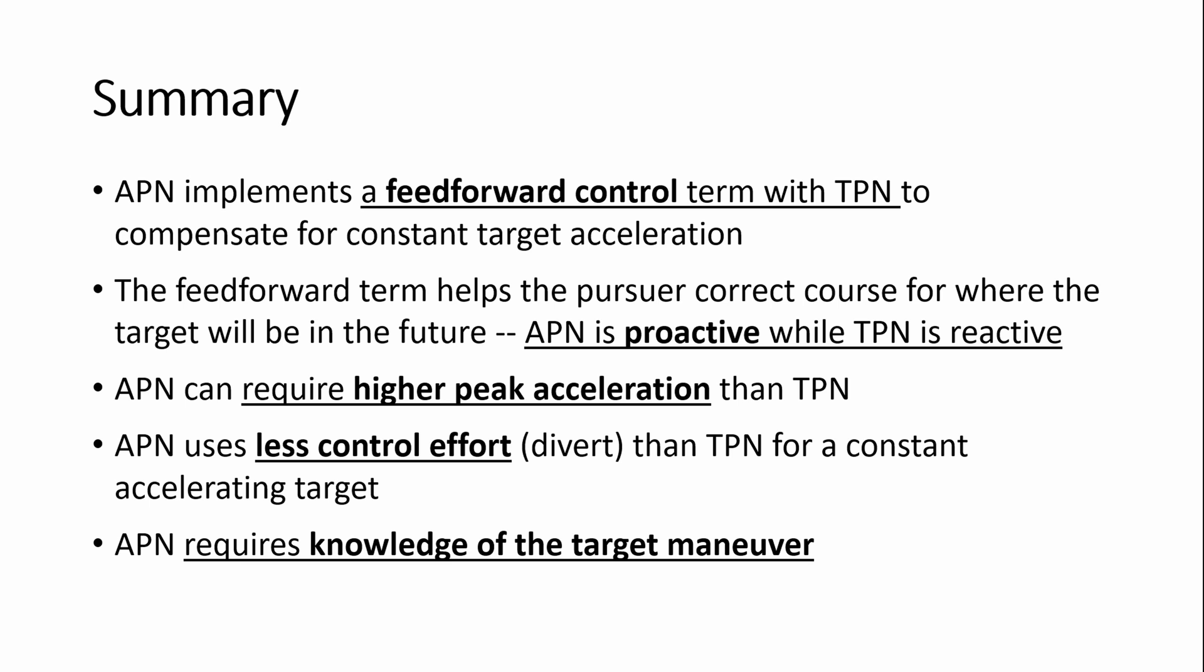But all of this really relies on what the target is going to do and our knowledge of it. Augmented pronav is useful and very capable against targets that pull hard turns or accelerate constantly. And when we know what that acceleration is going to be, when the target does something different, then APN will degrade. And we have to evaluate whether it's suitable or whether something like a pure feedback loss, which is true pronav or pure pronav, would be more reasonable given our uncertainty about the target maneuver set.